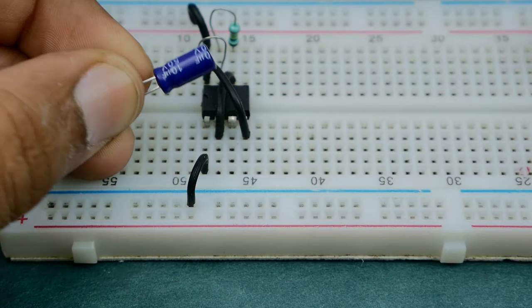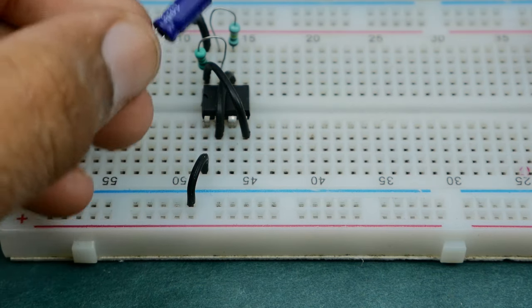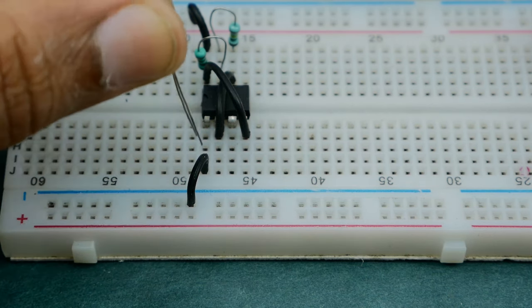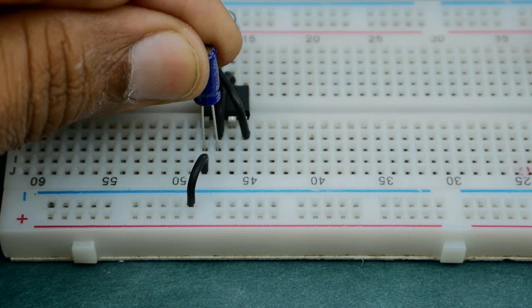Next take a 10 microfarad capacitor and connect its negative terminal to pin 1 of the 555 timer IC and the positive terminal to pin 2 of the IC.